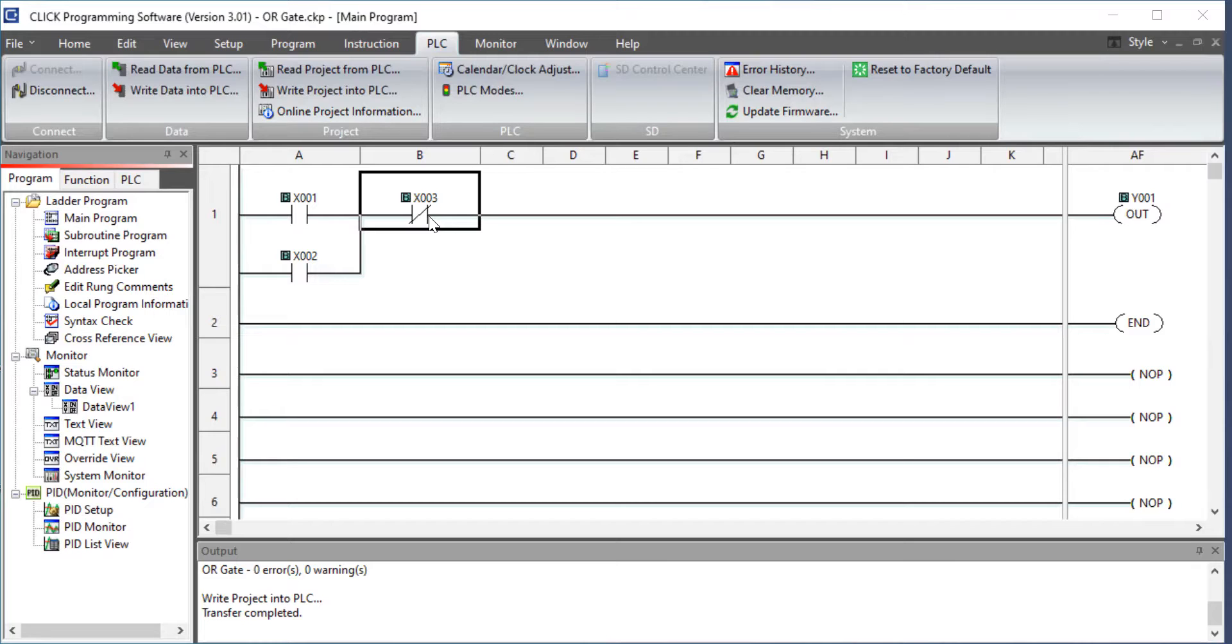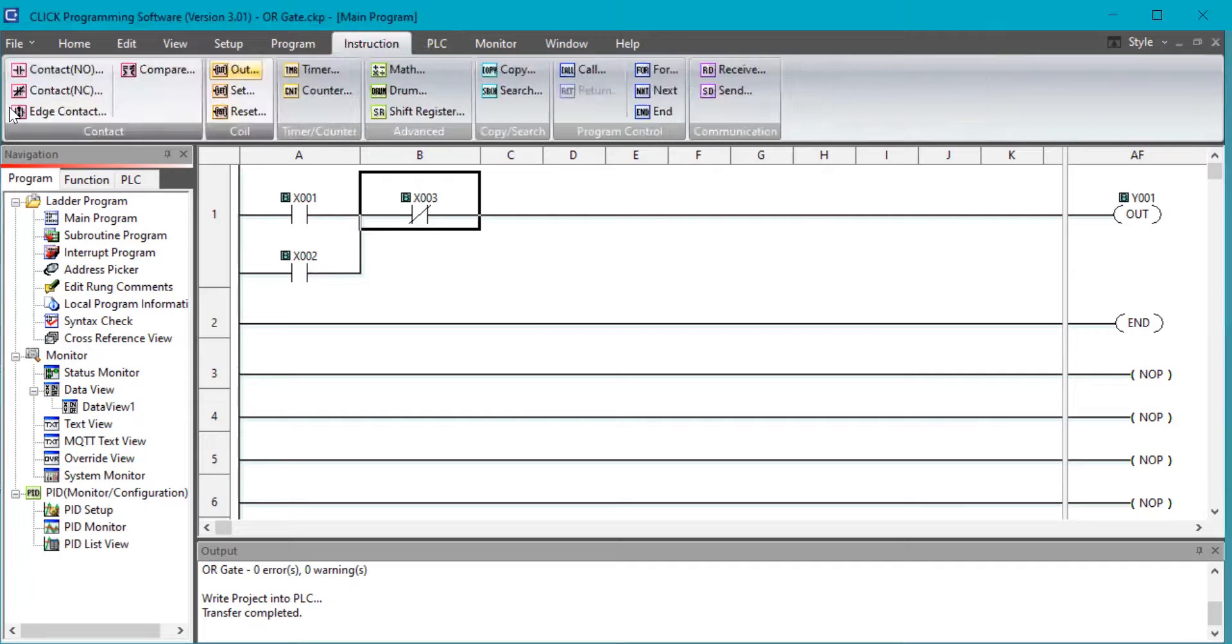You have a switch here which is normally closed. Now when we do normally closed, the NC is normally closed. So you have a normally open, normally open, normally closed, and we still have the same LED out. So that's all the same.